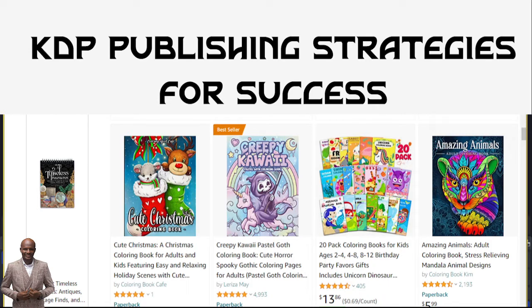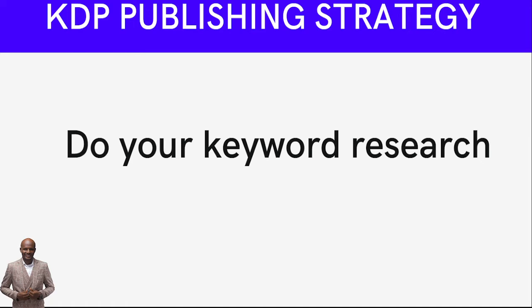Number one: learn to do your own keyword research. This is very important. Some people want to treat KDP as a business and pay for everything — they pay people to get keywords for one book. But you're not publishing one book, you're publishing many books, and you don't need to waste money like that. Learn to use the Amazon search bar to do your keyword research. You can use the KDP Suggestion Expander Chrome extension to get more keywords from Amazon for free.